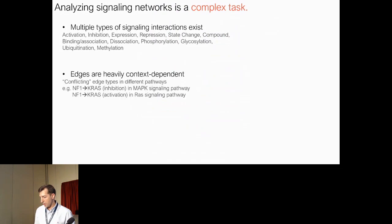Second, these signaling edges are heavily context-dependent, meaning that an edge between the same pair of nodes might mean different things in the context of different pathways.